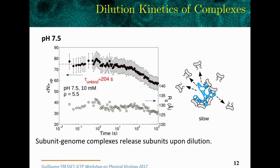To illustrate this weak interaction between proteins and RNA, we started from complexes and diluted them two times. Upon dilution, the average number of subunits bound to RNA decreased from 75 to about 57, over a typical timescale of 204 seconds. So the complexes, upon dilution, just release subunits into solution. This shows that entropy has a strong role in the formation of the complexes and the exchange of subunits with the bulk solution.